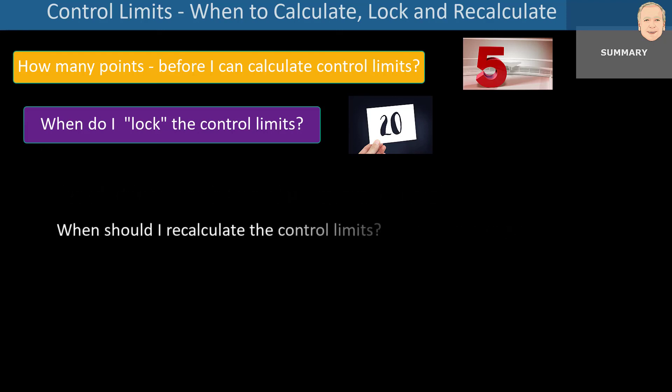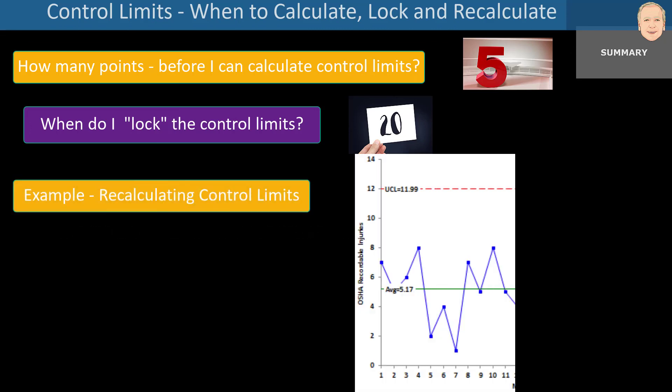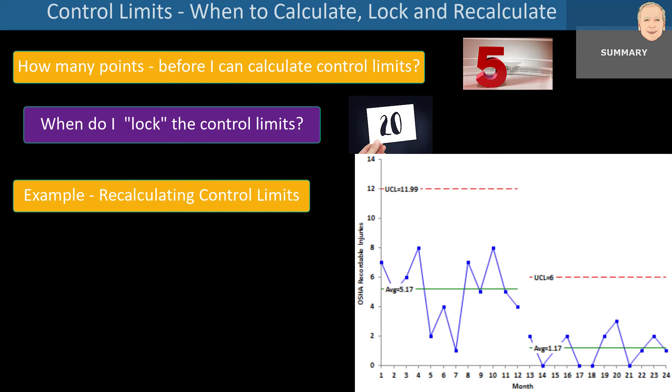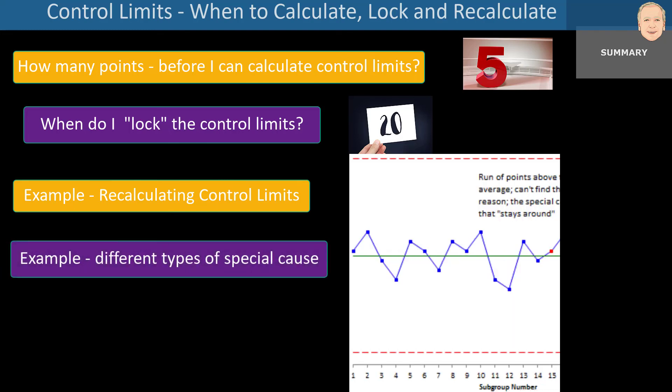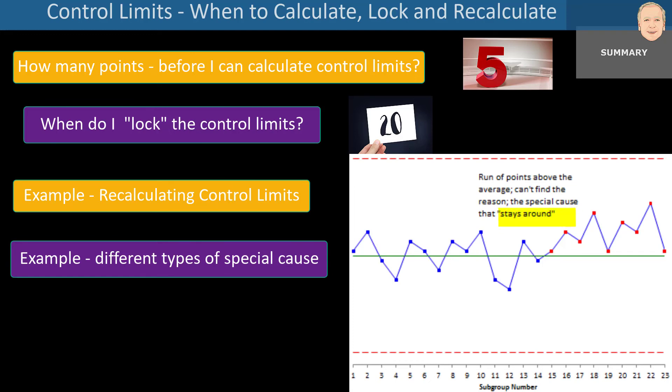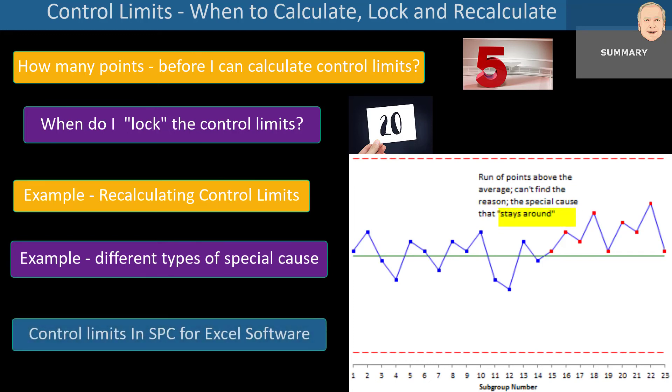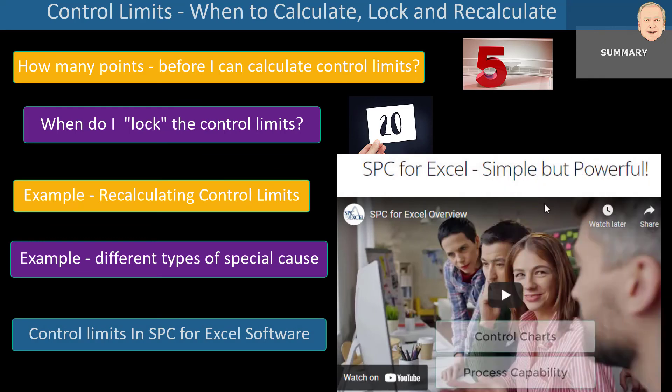How do out of control points impact the control limit calculations? Should I delete them before calculating control limits? No, you shouldn't necessarily. Depends on the impact. When should I recalculate control limits? That's when the process is significantly changed, as we saw in the example of the C chart. And we took a look at different types of special causes. One that stays around and one that is fleeting.